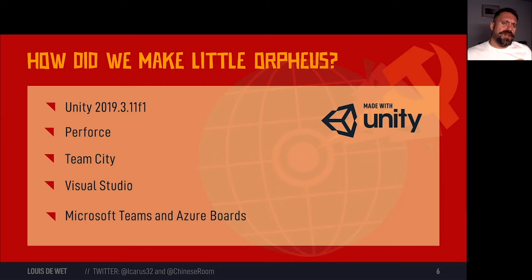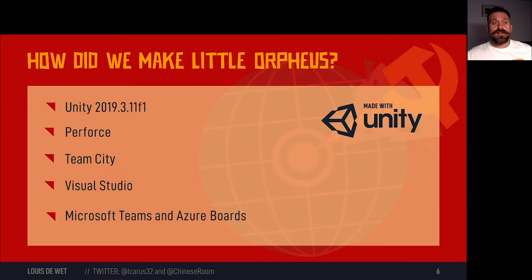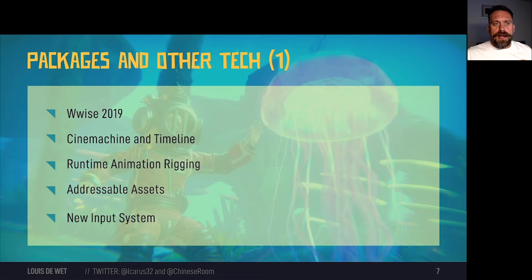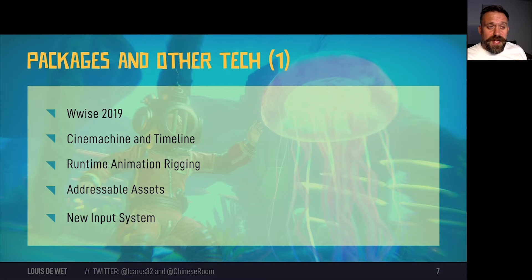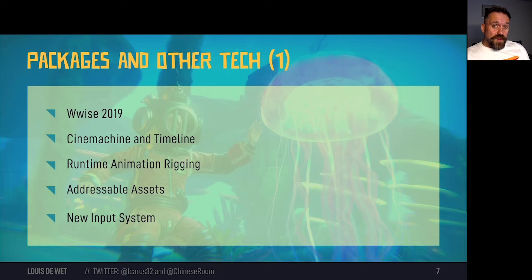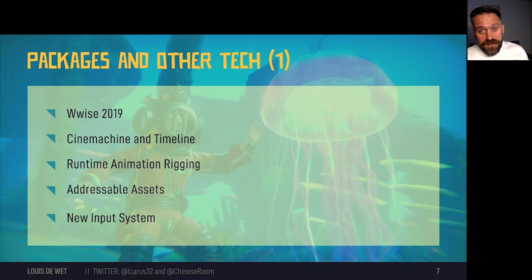We shipped with Unity 2019.3.11f1 in June 2020, Perforce for source control, TeamCity for continuous integration and automated upload to TestFlight, Visual Studio for coding, and Microsoft Teams and Azure Boards for planning and communication. Our game features lots of cinematic sequences and great music. We used Wwise for all of our audio and Cinemachine for getting those great camera shots combined with Timeline to create great looking sequences. This also allowed us to seamlessly move between gameplay and cutscenes. We also used runtime animation rigging to refine Ivan's animations, like using IK to get his feet to follow the floor geometry. We used Addressables, but more on that later.